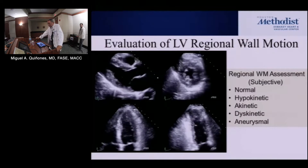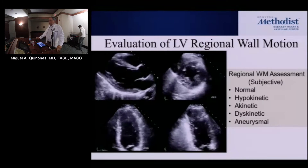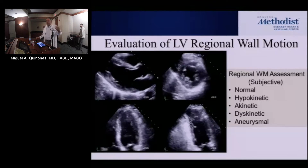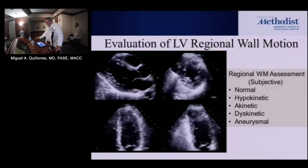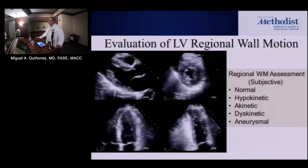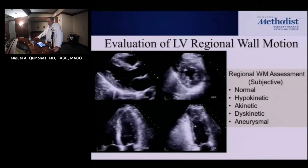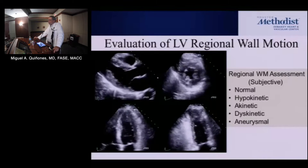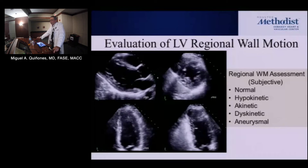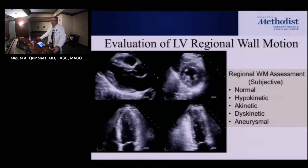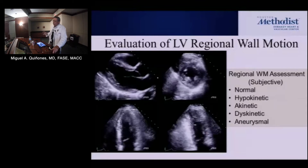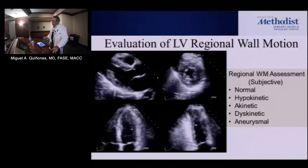We talked a few weeks ago about the global assessment. Today we're going to talk about the regional assessment, which is the other very important component of our evaluation done on every single patient. By convention, regional function has been classified as normal contraction, hypokinetic or depressed, akinetic when basically there's no contraction that can be seen, dyskinetic when it's actually bulging out in systole, and aneurysm — a frank geometric distortion seen even in diastole. There's a difference between an aneurysm and plain dyskinesis because with an aneurysm you need to have geometric distortion in diastole as well as systole.